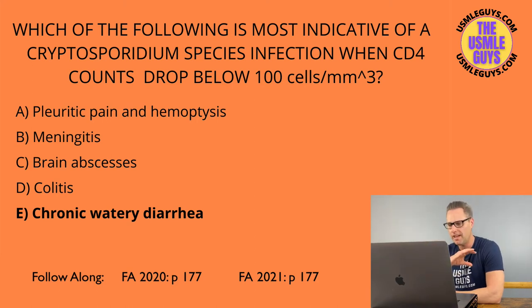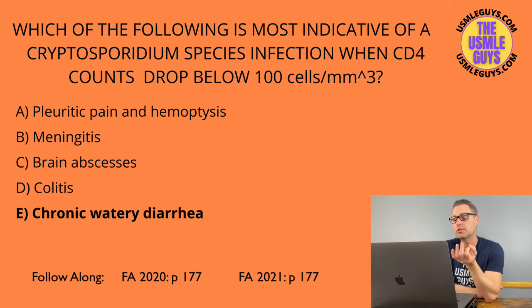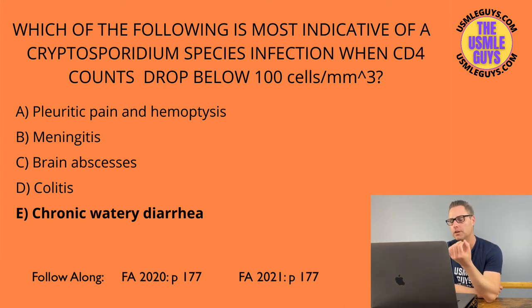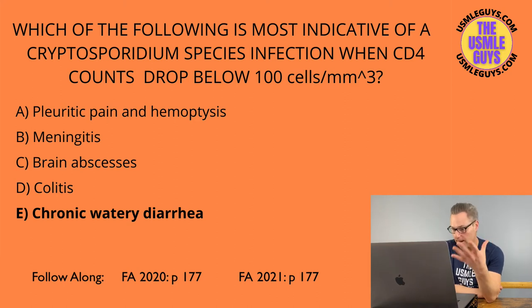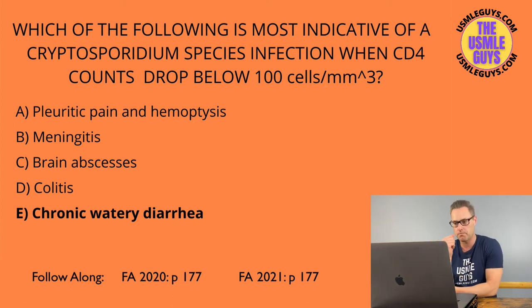Out of all these, MAC is probably the one that pops up most frequently. Aspergillus fumigatus — watch for pleuritic chest pain and hemoptysis. On chest imaging, expect infiltrates or cavitations — very important to remember those cavitations.